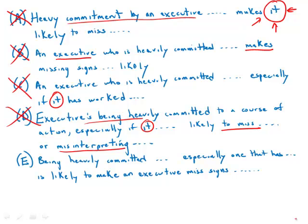We hope E works — let's look. 'Being heavily committed to a course of action, especially one that has worked well in the past' — 'one' clearly refers to the action. 'Is likely to make an executive miss signs' — a very powerful, clear, direct core to the sentence. 'Miss' and 'misinterpret' are parallel correctly. The only pronouns that appear are 'them' and 'they' at the end, clearly referring to the signs — no ambiguity. There's a clear core, so E is by far the best answer choice.